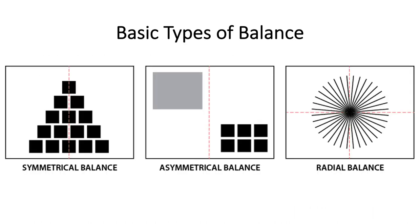There are three different basic types of balance. You have symmetrical balance, which you can see in the example on the left of the pyramid of squares. If we draw a line down the center, everything is exactly the same on either side of the axis — a vertical axis — and that would be called perfect symmetry, or mirror symmetry, because there's no variation at all. We have asymmetrical balance, where drawing a line down the center reveals we don't have the same thing on either side. We've got the larger gray rectangle at the top and six smaller black squares at the bottom on the other side, but it still feels balanced.